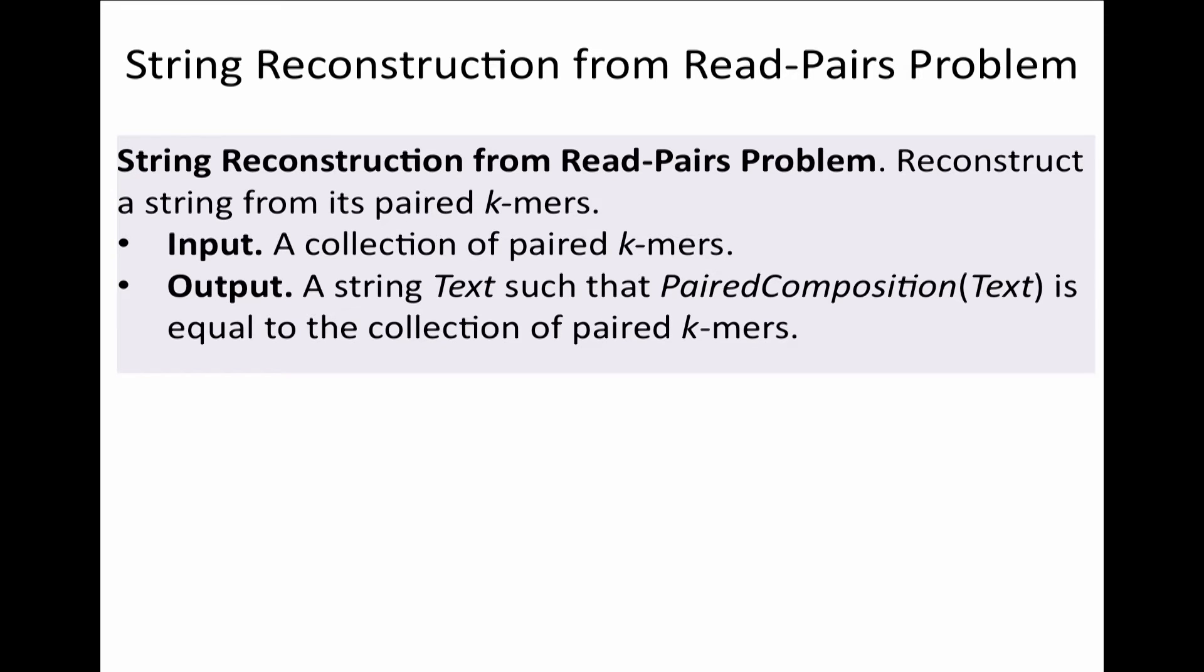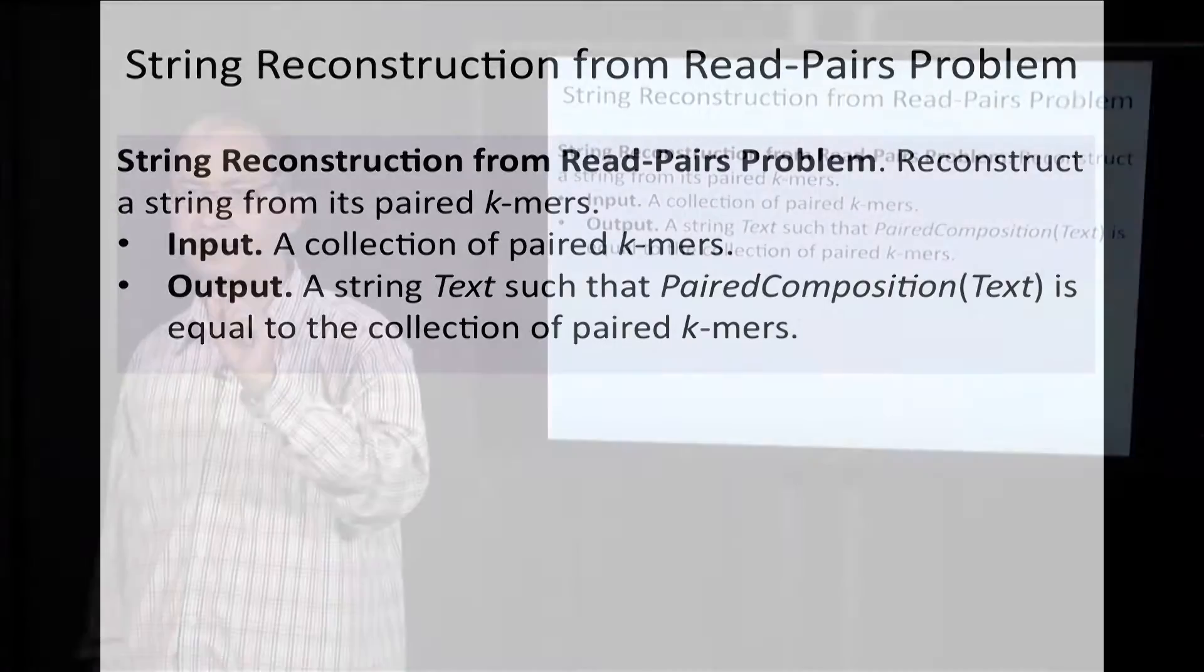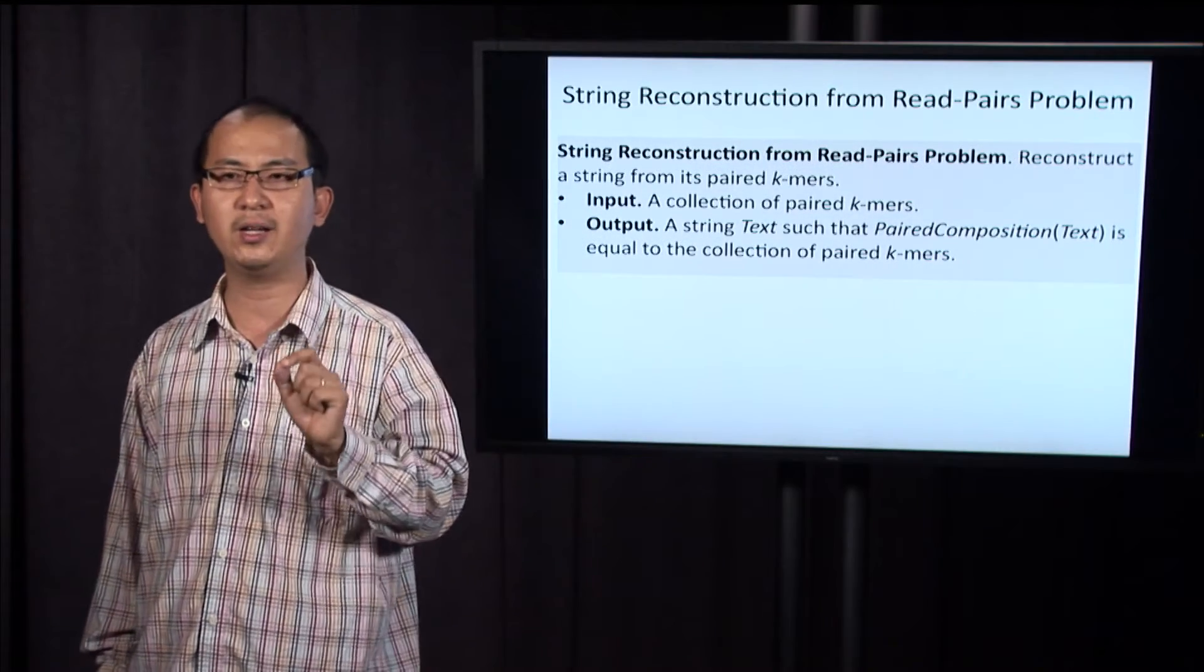Or, let me describe formally. Input is a collection of paired k-mers, output is a string text, such that the paired k-mer composition of text is equal to the collection of paired k-mers.